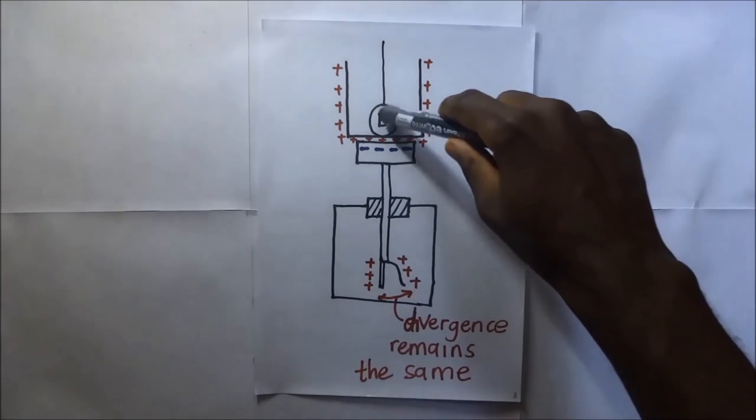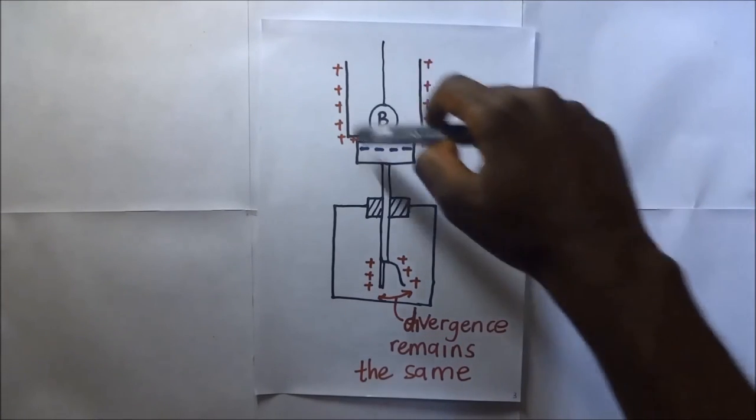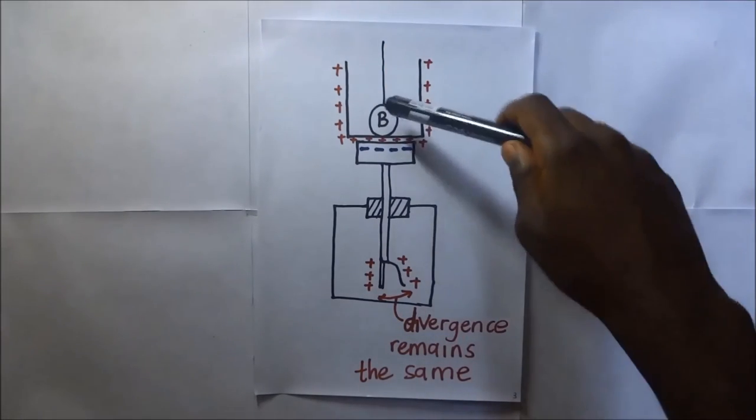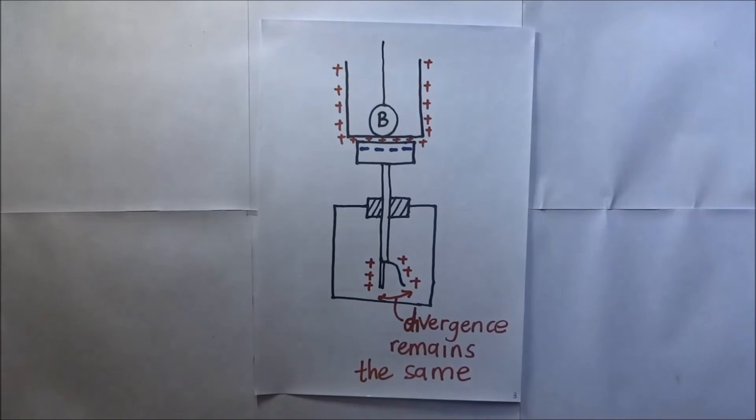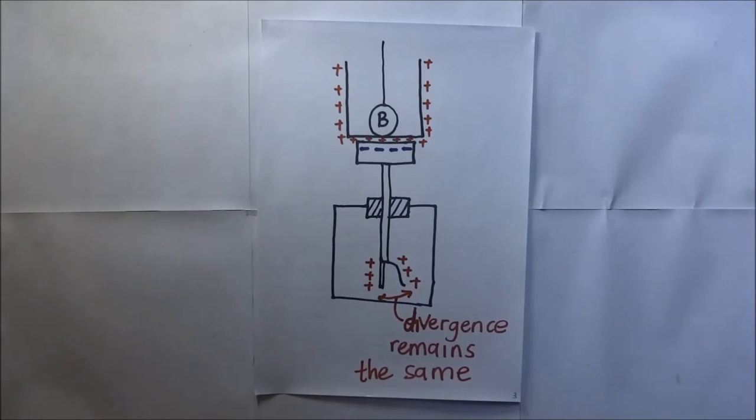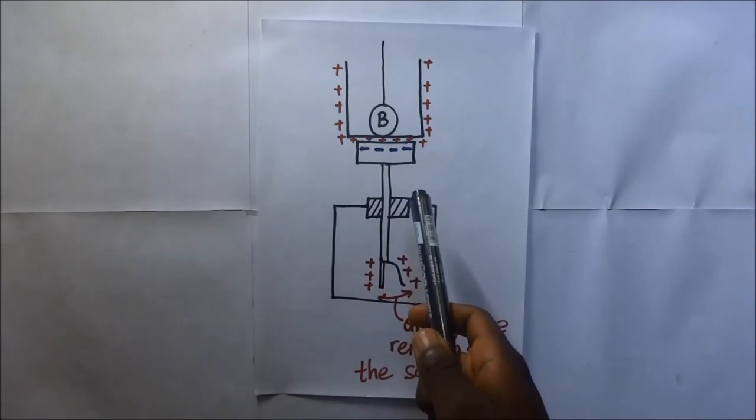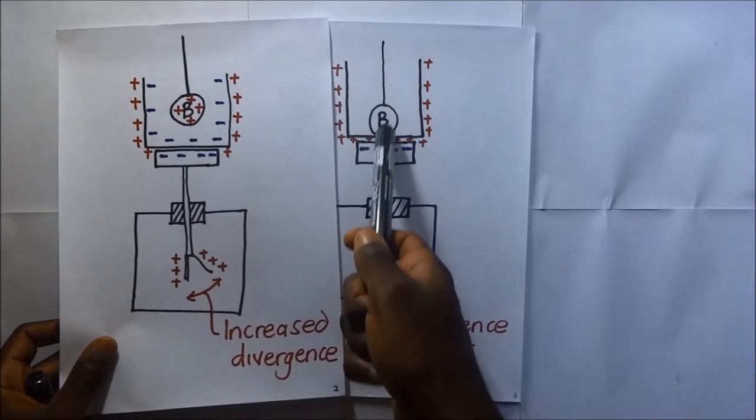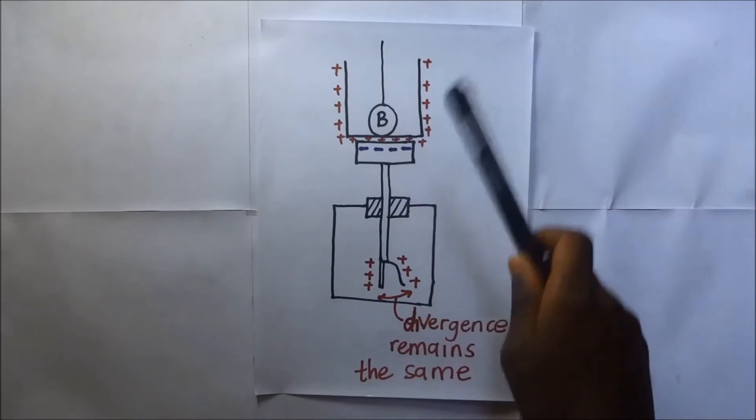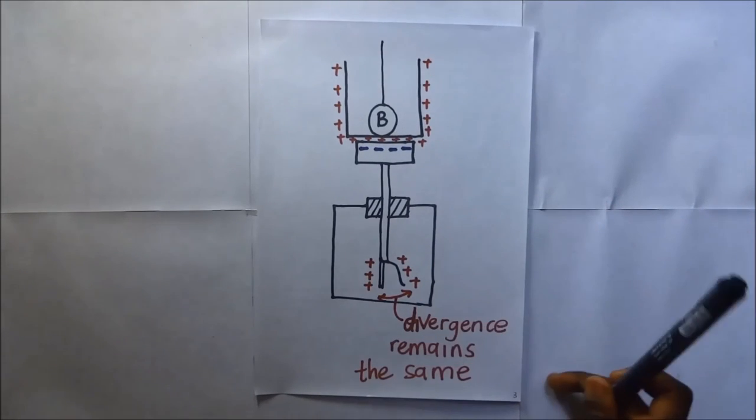We now let sphere B to touch the walls of the ice pail. When we let sphere B touch the walls of the ice pail, and then we later remove this sphere and test for the charge, we will find that there is no more charge on sphere B. Initially, we had put it in when it was positively charged. But when we let sphere B touch the walls of the ice pail, then remove it and test for the charge on B, we will find that B does not have any charge.